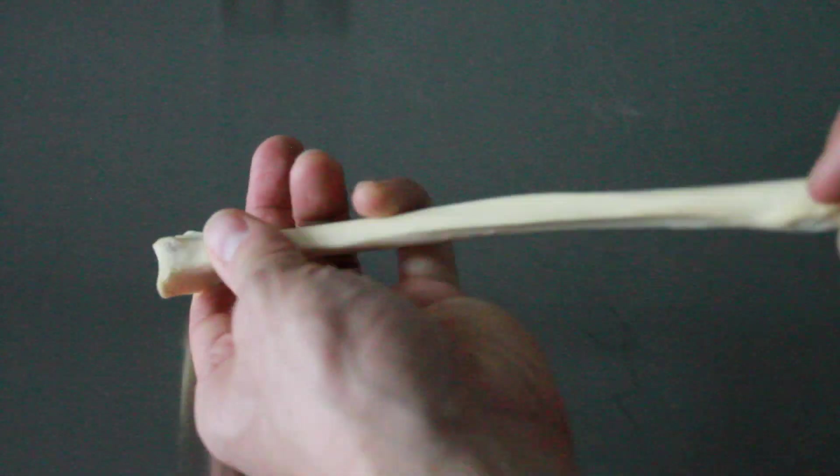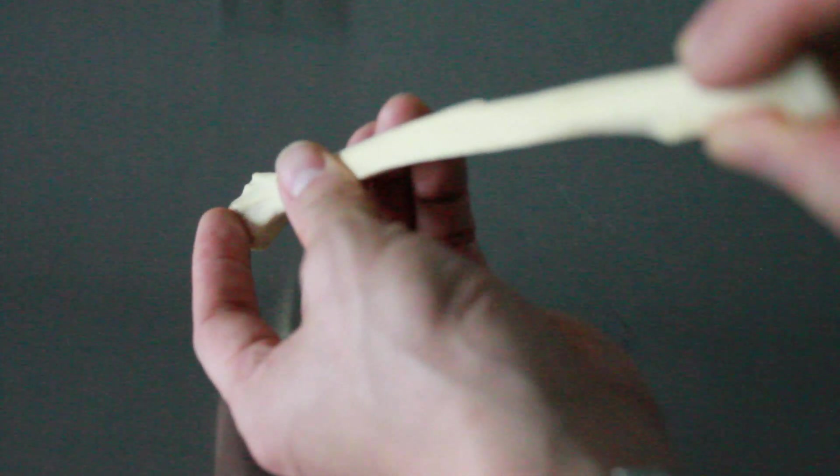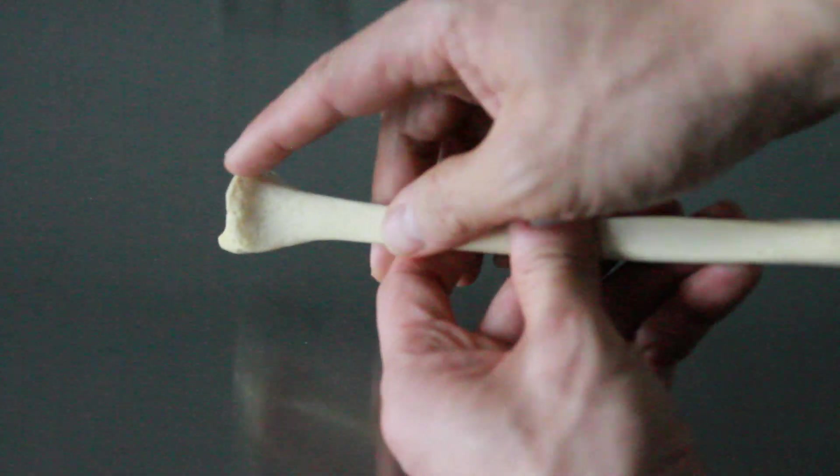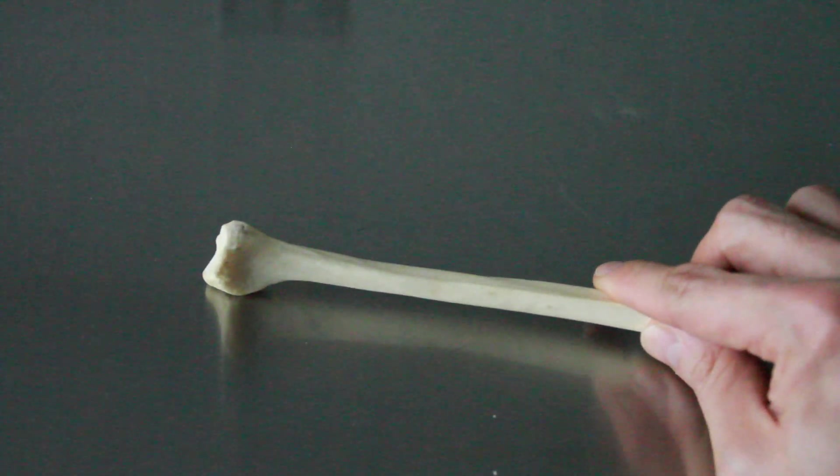So that means this little notch here, you can hopefully see this little notch, that's where it's going to articulate with the ulna making our distal radioulnar joint. And this ulna, ulnar notch, is always medial.